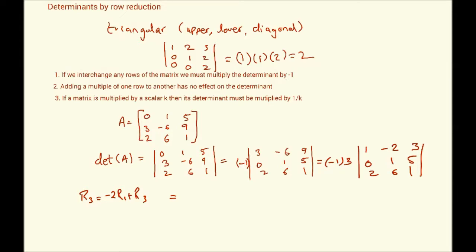And that gives us, said that this determinant is equal to minus 1 into 3 into 1 minus 2, 3, 0, 1, 5. No change there. This will be 0. So, it gives us this essentially. And we move ahead then.